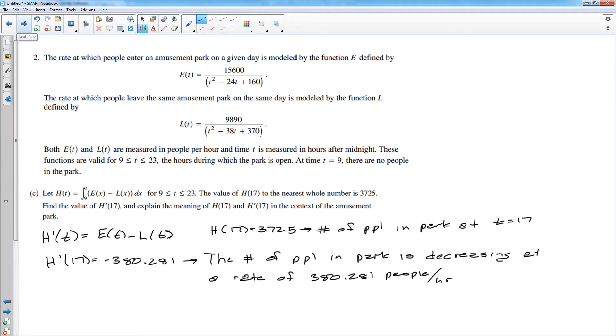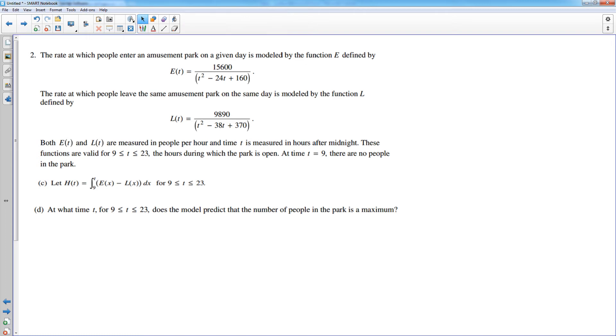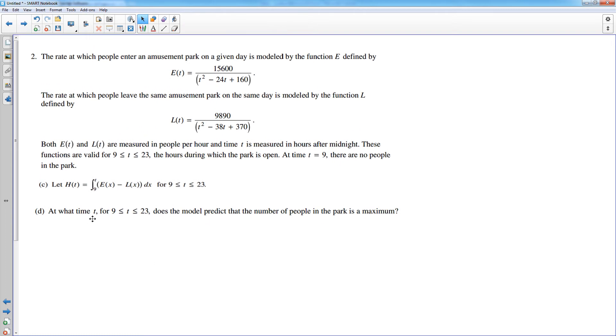And the last one is reliant a little bit on the setup for C. D says at what time is the number of people in the park a maximum? Well, now we have to think, when does any function have a maximum? And what I'm going to do is write down my candidates. Your candidates for any maximum, when you're on a closed interval, are critical numbers and endpoints. So my candidates are my endpoints, which are t equals 9 and 23, or my critical numbers. And so we have to find critical numbers, which would be when h prime of t is equal to 0.